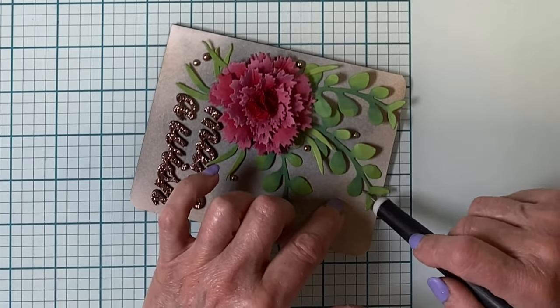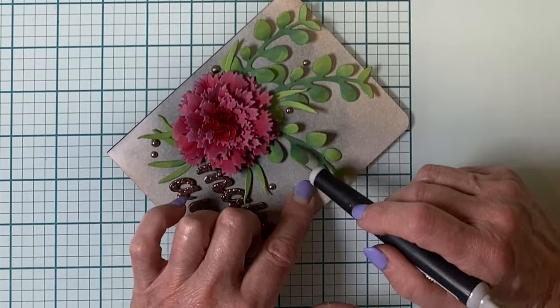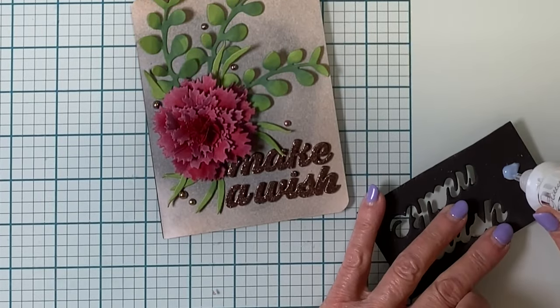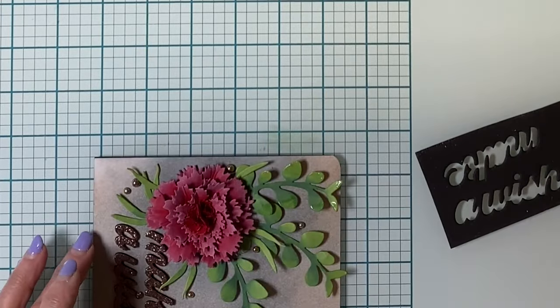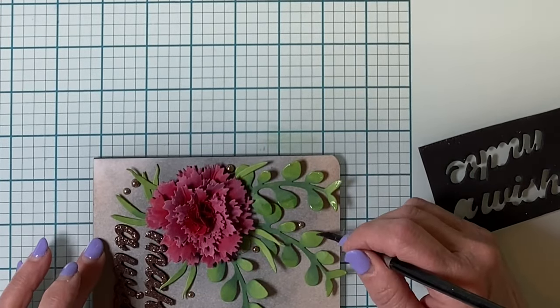And after I've used my craft pick to help pick up those leaves, I'm going to use a paint brush and Nuvo Glitter Drops White Blizzard and just add some shimmer to the tips of all of the leaves. When this medium dries, it is clear and super shiny.